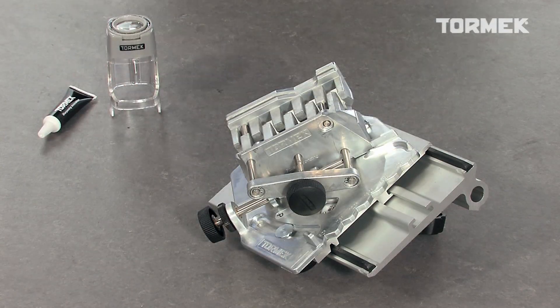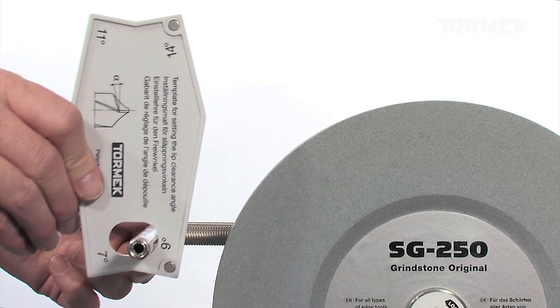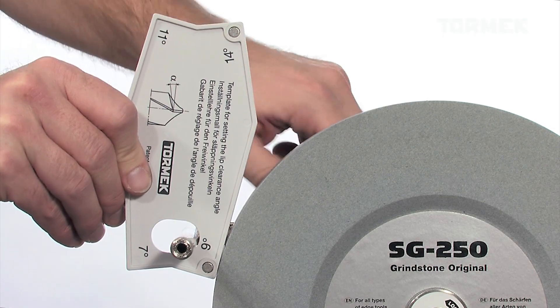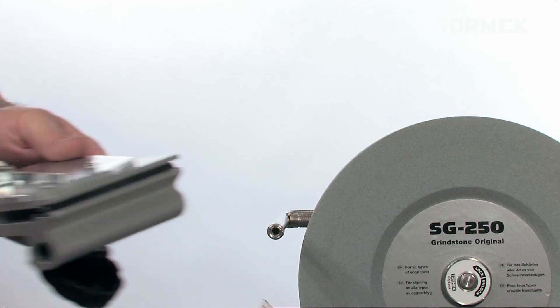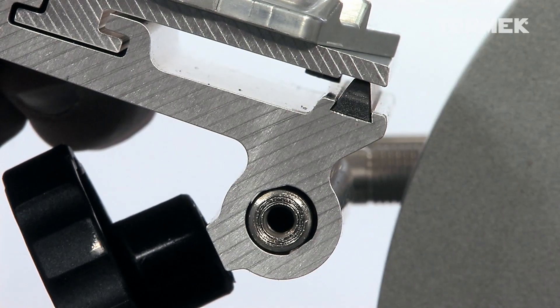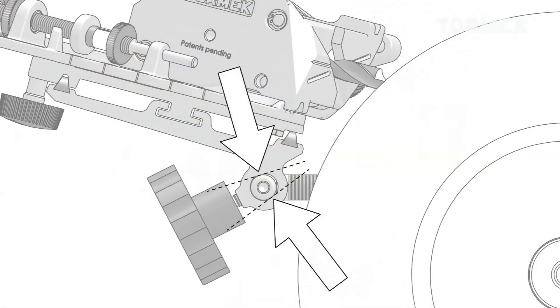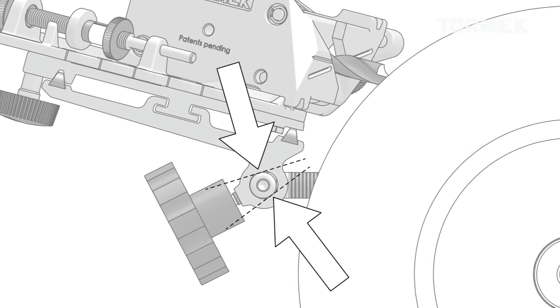Start by setting the distance of the universal support from the stone using the hole in the setting template. Mount the base plate. Thanks to the TORMIC patented design, it will lock securely.